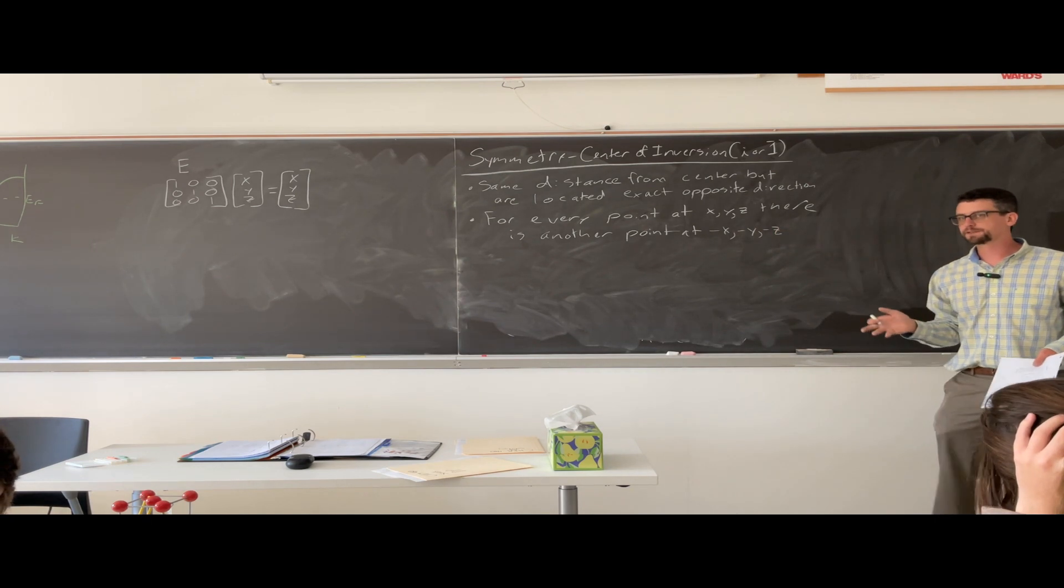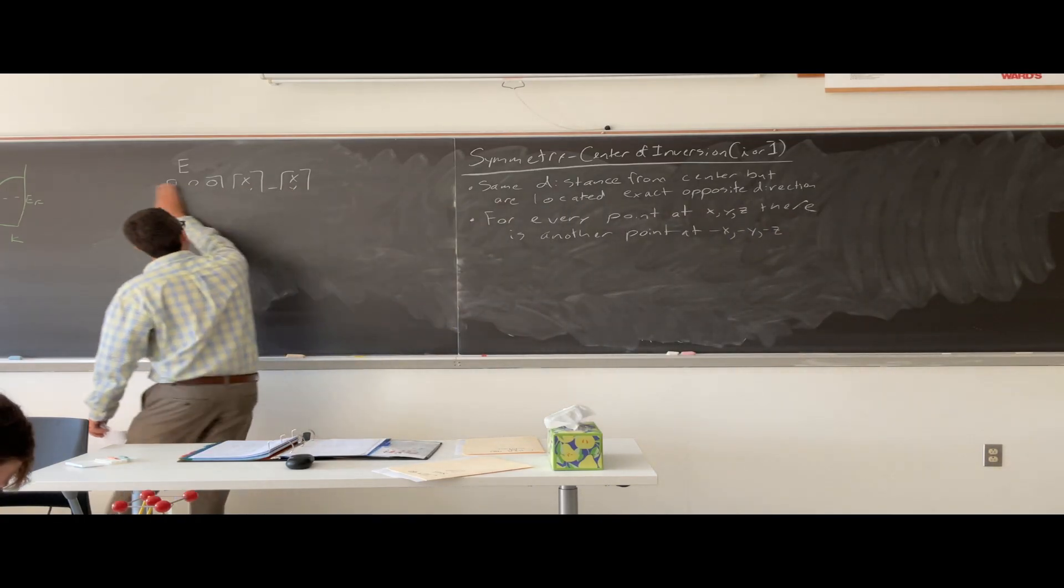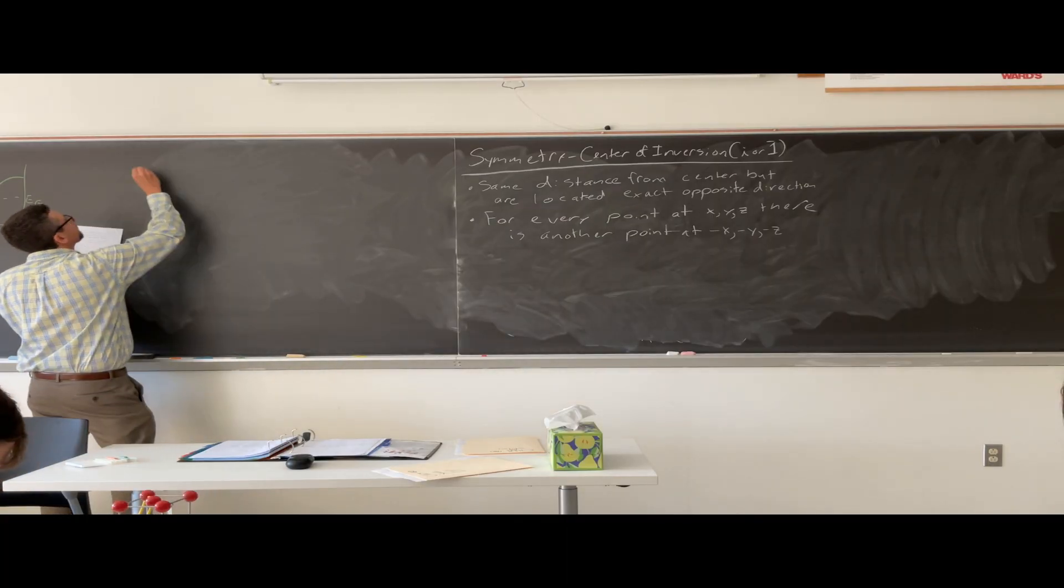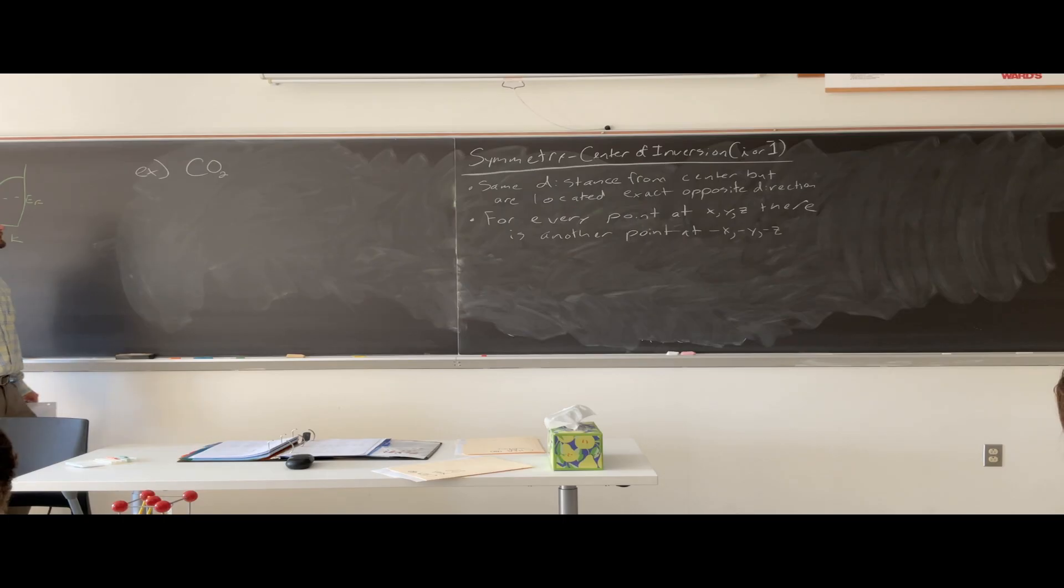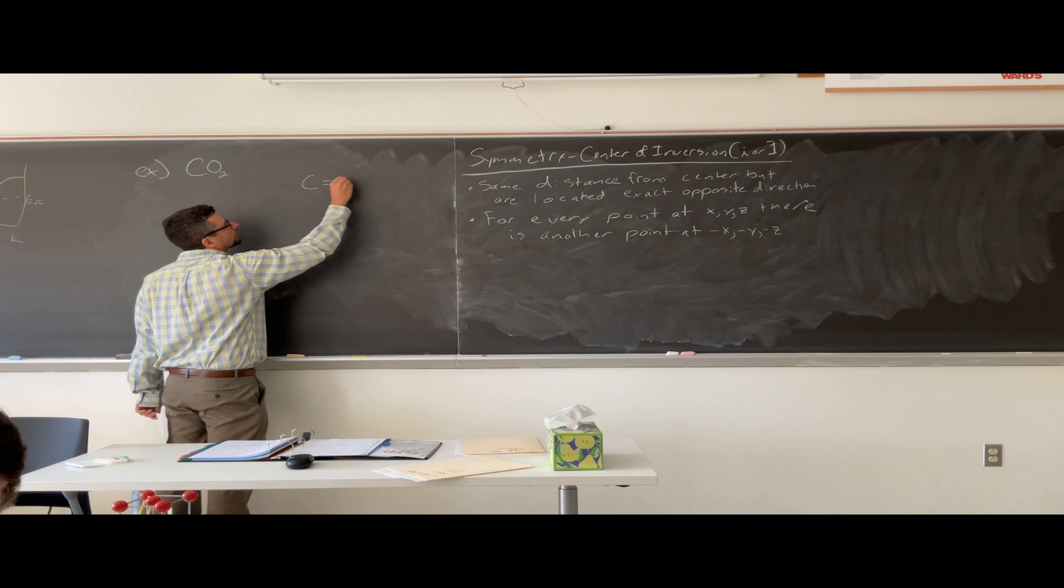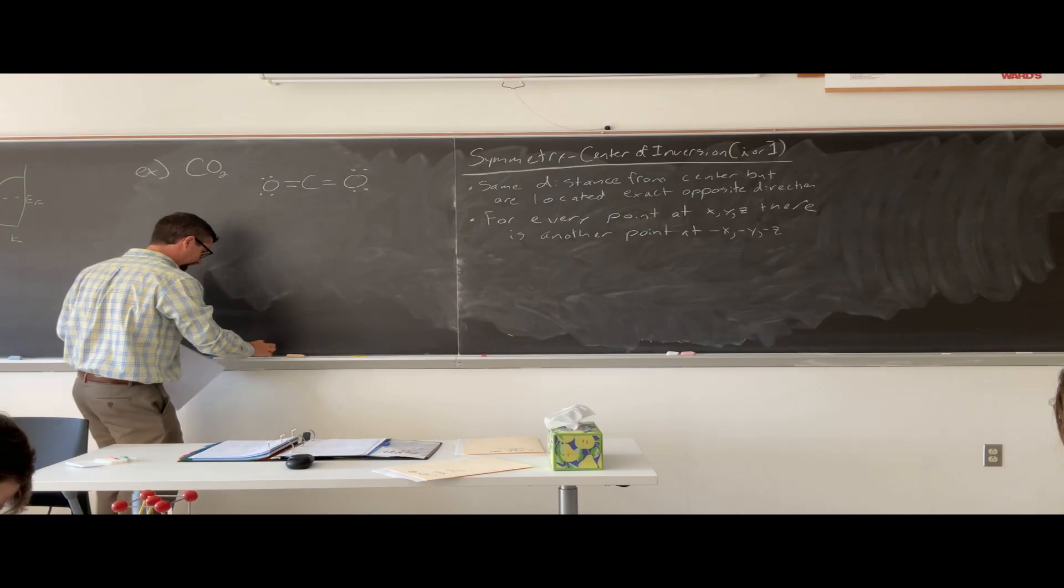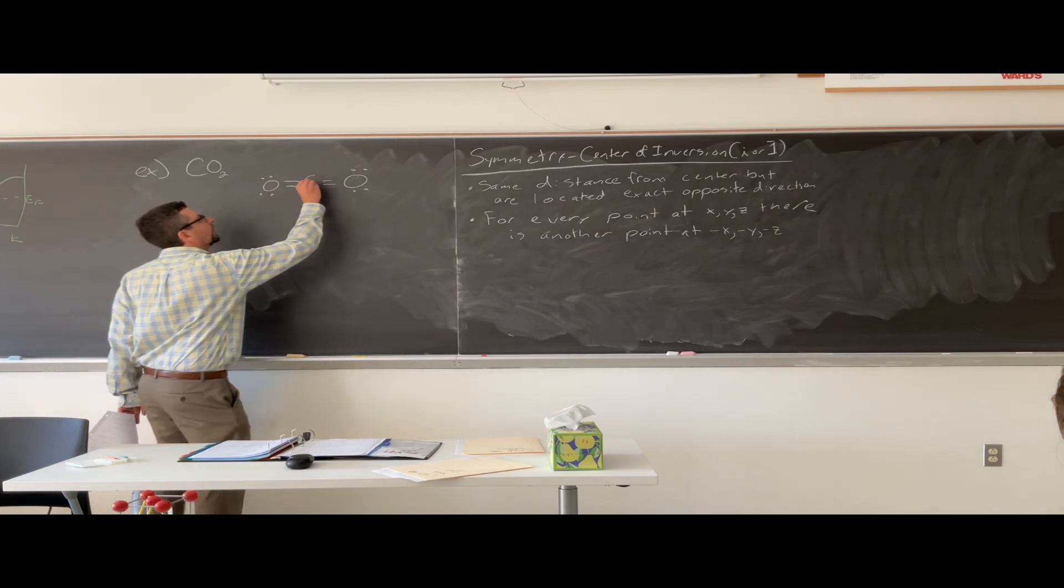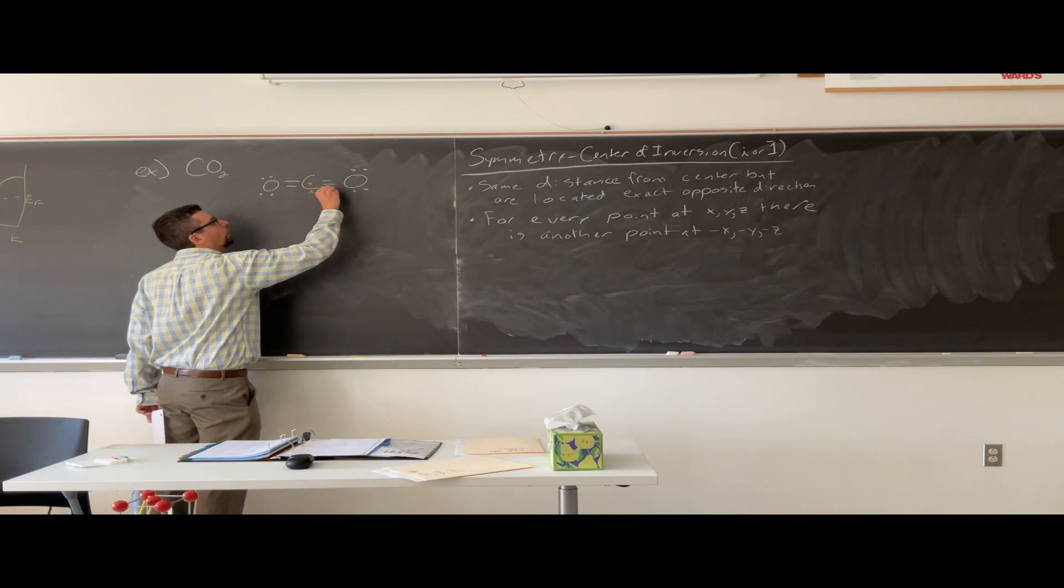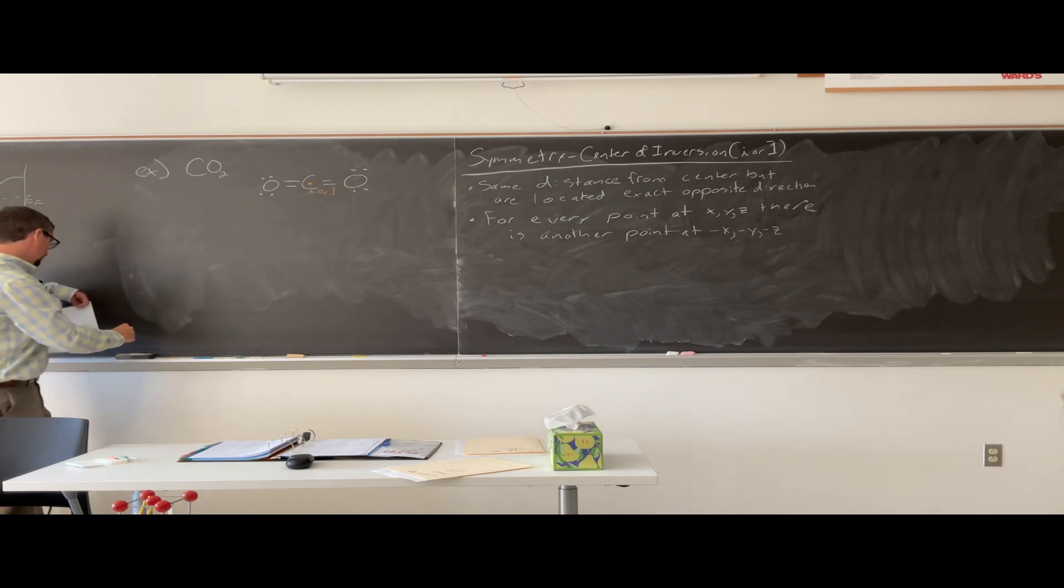We're going to look at some molecular examples first, and then we're going to look at the transformation matrix after. Sample carbon dioxide. Anybody have an idea what the Lewis structure looks like? Molecular shape. Linear, yeah. Where is the symmetry of inversion? At the carbon, dead center in the carbon? We would mark it with an i or a one bar. There are many other symmetry operations in here, right?